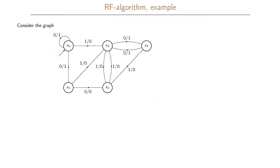Let us consider the following example of the RF algorithm. The graph has five states S0 to S4, one input signal that can take either 0 or 1, and one output signal which also takes value 0 or 1. For state assignment we would need three binary symbols to represent the states. Before doing state assignment, it is worthwhile to run the RF algorithm to see if we can represent this with fewer states. For each state we write the state transition function and the output function.